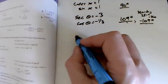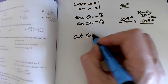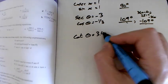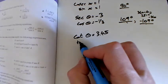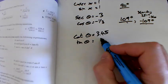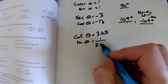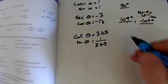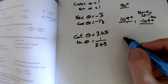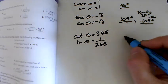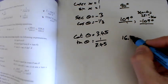Third one, I've got cot theta equals 3.45. So tan theta is 1 over 3.45, and that's going to give us the inverse tan of 1 over 3.45 is 16.2 degrees.